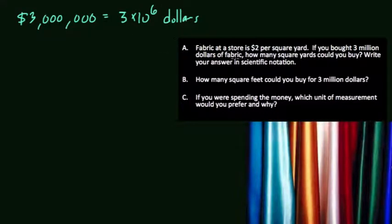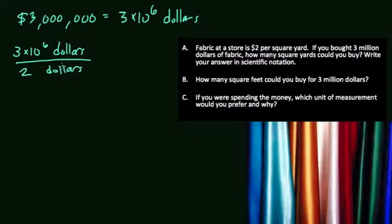For fabric that costs $2 per square yard, every $2 you have lets you buy another square yard. So if we have 3 times 10 to the 6th dollars and divide that by $2, this tells us how many total square yards we have. For example, $4 divided by $2 means you could buy two square yards. Same logic here.